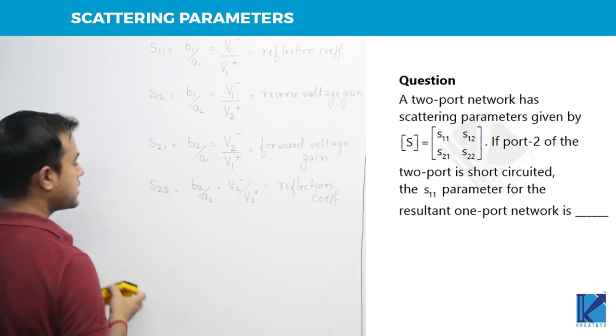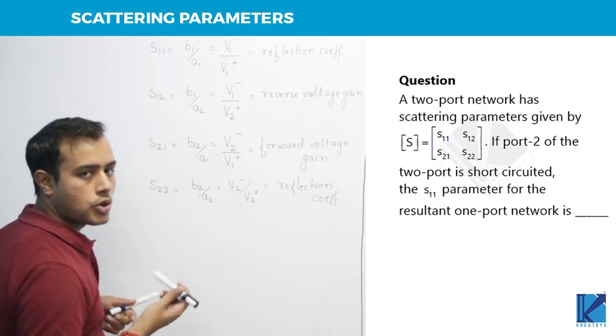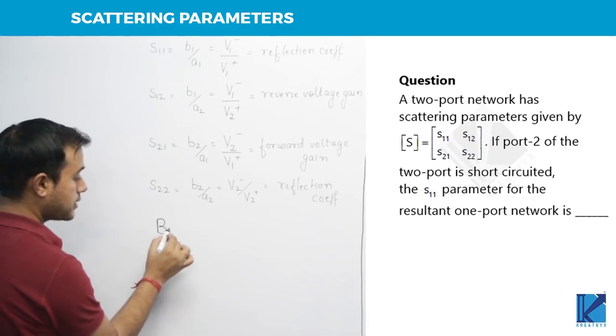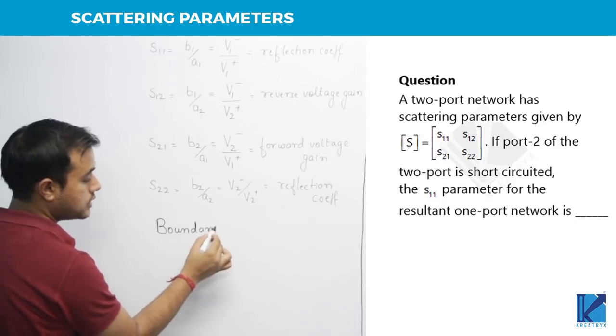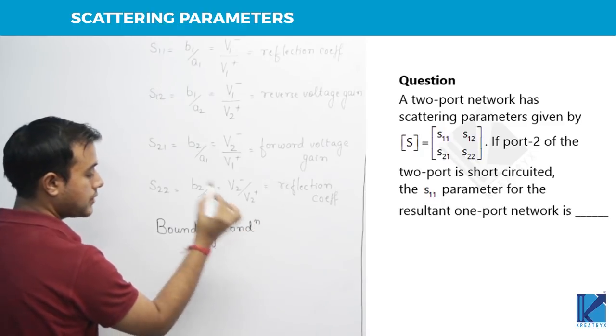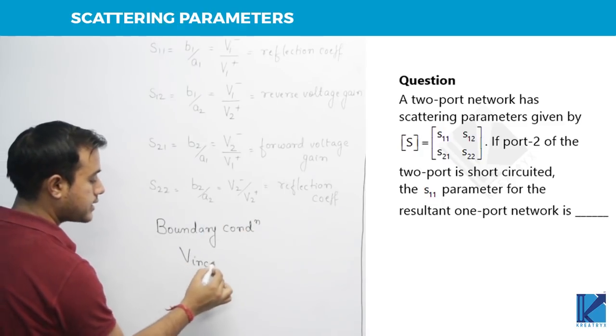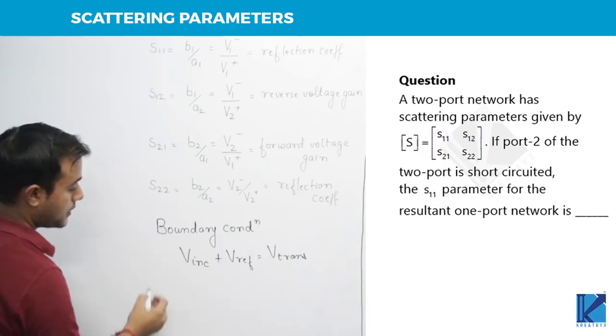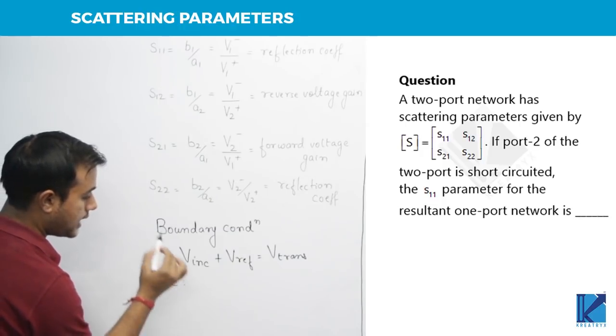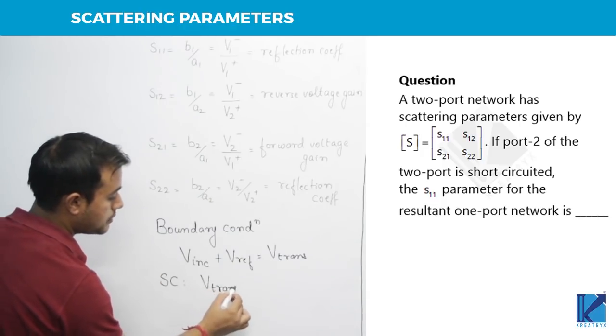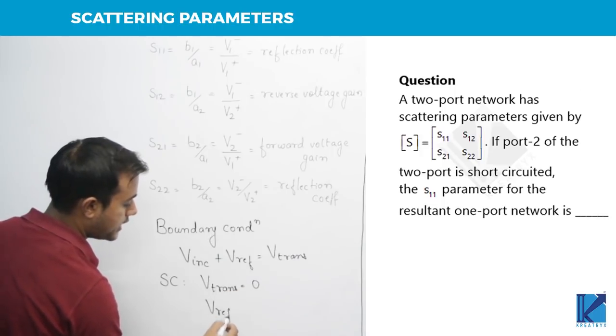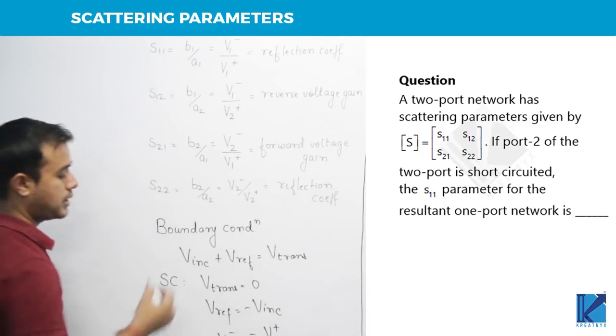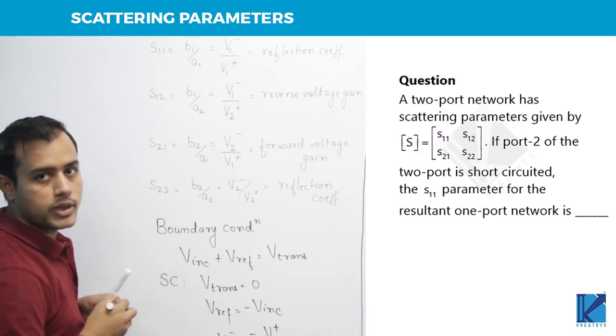So now what happens is, there are some points from EMT that you should also know, that the boundary condition. What are the boundary conditions in a transmission line? Boundary conditions are that incident plus reflected wave is always equal to transmitted. So if you short circuit a line, this transmitted wave will become zero, which means reflected wave will be negative of the incident. Or you can say V minus is equal to minus V plus. That is one thing that you need to know.